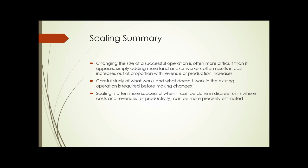Scaling is often more successful when it can be done in discrete units where costs and revenues or productivity can be more precisely estimated. For instance, if you're running a successful urban agriculture operation on two acres, you may find scaling easier if, when you scale up, you do another two-acre plot. You know what works on your first plot, and it's likely those things will work on the second plot. The issues you'll have are those incremental costs that you don't have with just one location — supervisory personnel for the second plot, transportation, communications, and that sort of thing. And those costs can be relatively easy to identify, so if you can do discrete units like that, it works pretty well.